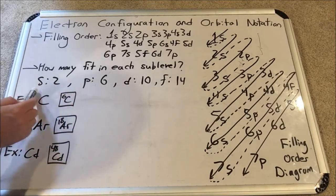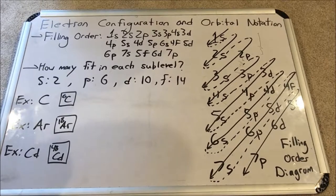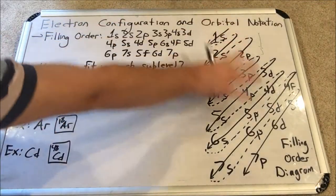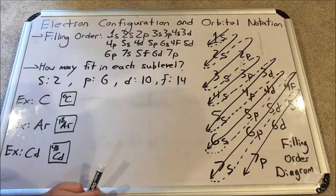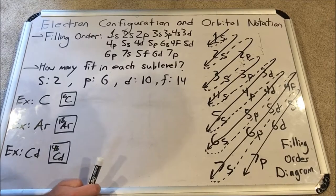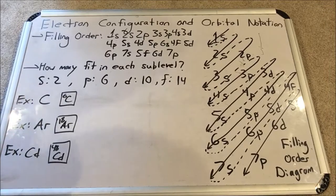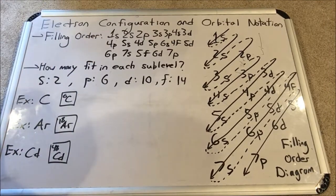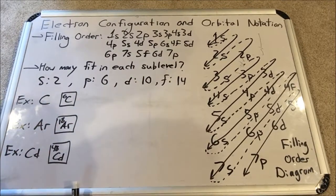The filling order is not super straightforward because these sublevels S, P, D, and F have increasingly higher energies associated with them. Let's go through the filling order. We will start with the lowest principal energy level, which is 1. The first principal energy level only has the S sublevel in it, so we will fill 1S first. Then we are completely done with N equals 1.